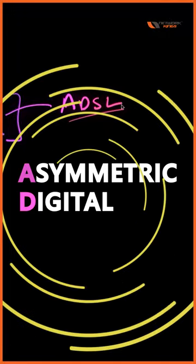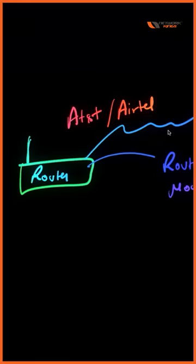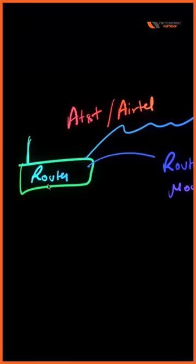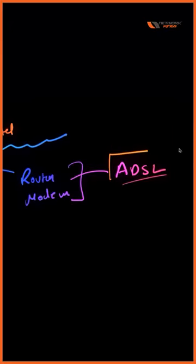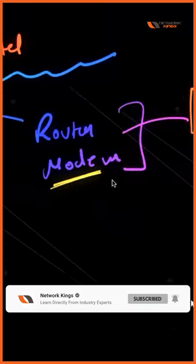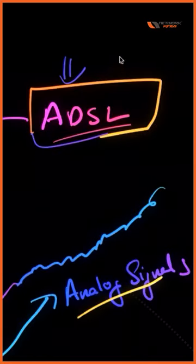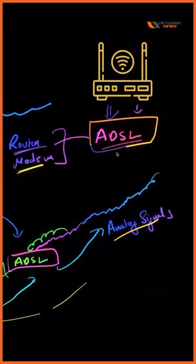What is ADSL? That is Asymmetric Digital Subscriber Line. Suppose you got a connection from any ISP. So the type of device you are looking at right now, that is an ADSL, because it has the functionality of a modem. Because this device is actually created for multi-purpose.